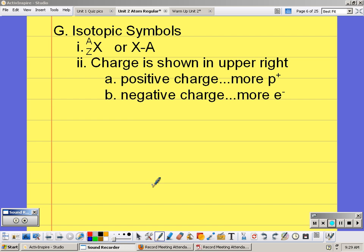Isotopic symbols: the letter A here represents the mass number, so mass number can either be in the upper left hand corner or it can be shown after a dash.